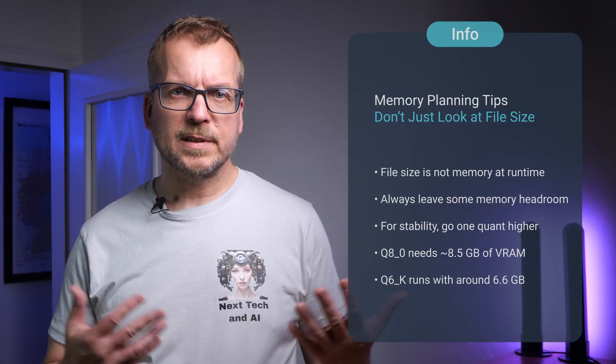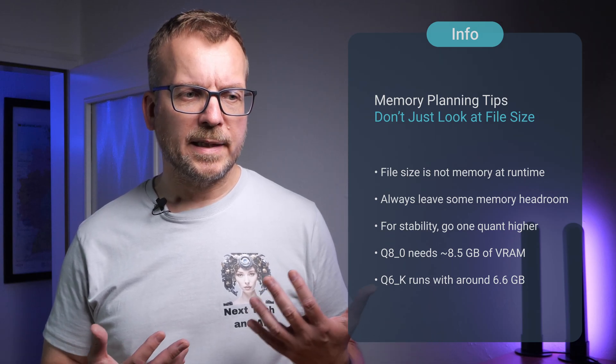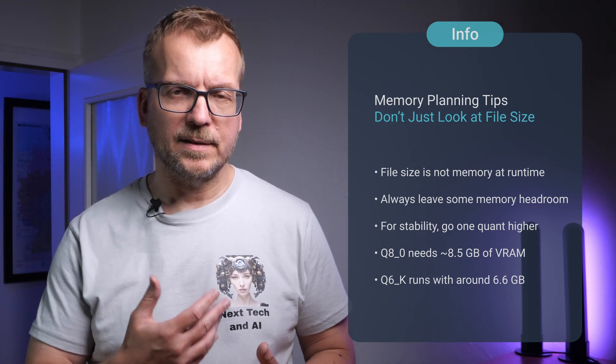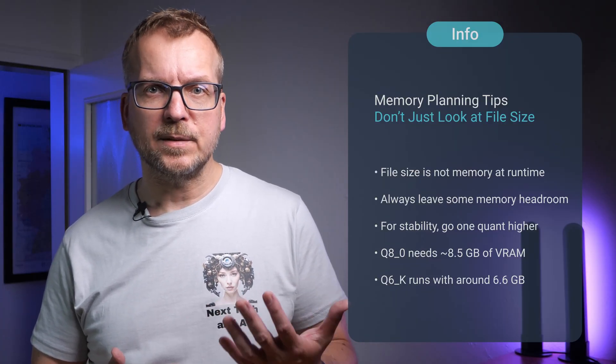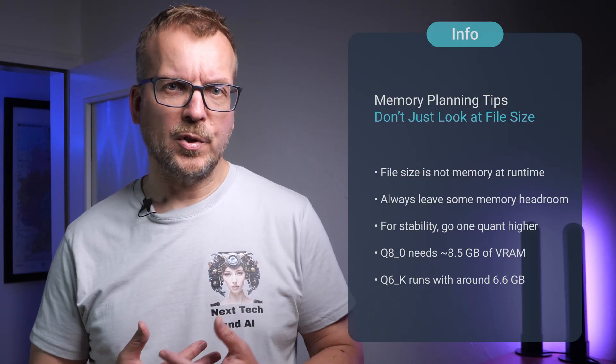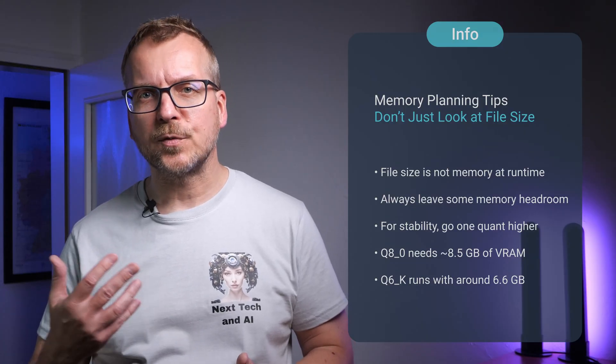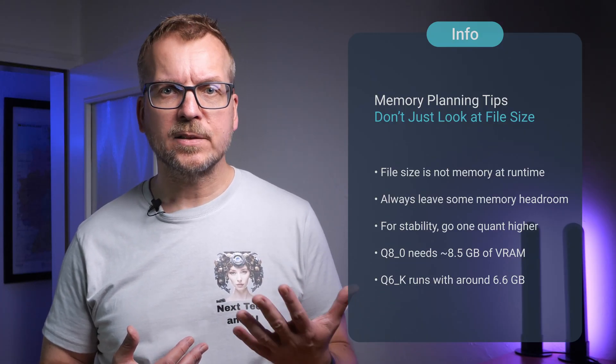File size is not equal to runtime memory — allow some headroom. If reliability matters, bias one rung up rather than down. As a reference point, a Llama 3.1 8B Q8_0 GGUF is around 8.5 GB. Q6K is around 6.6 GB. If that just simplified your choices, hit like — it helps others find practical guides instead of theory dumps.